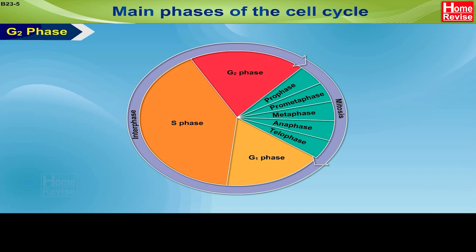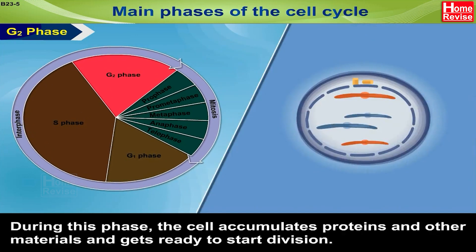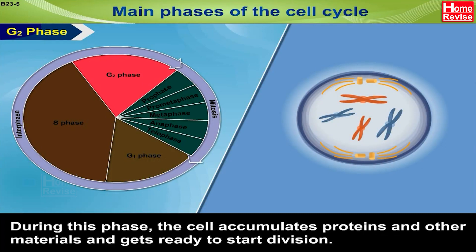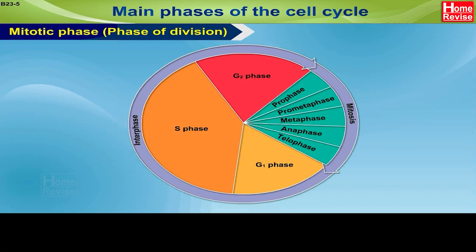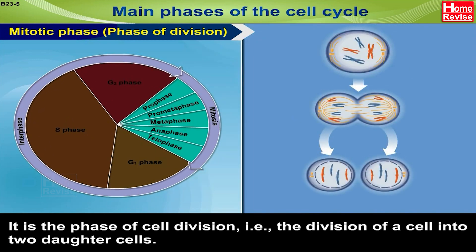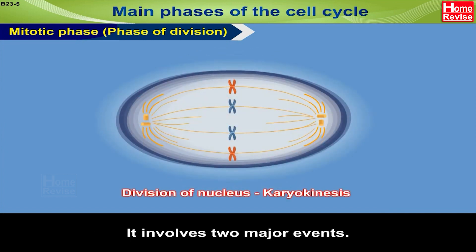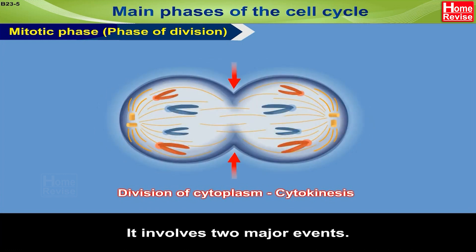G2 phase is the second growth phase. During this phase, the cell accumulates proteins and other materials and gets ready to start division. The mitotic phase is the phase of cell division — the division of a cell into two daughter cells. It involves two major events: division of the nucleus, called karyokinesis, and division of the cytoplasm, called cytokinesis.